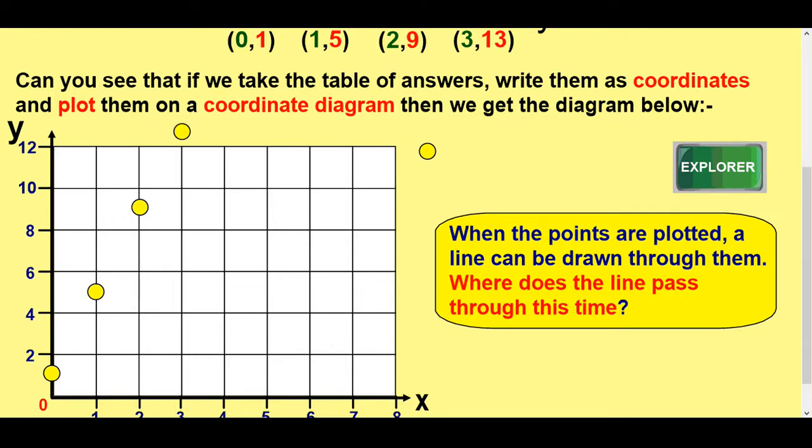So, once you've done that, you can join them up, and that should create a straight line. Because these are all linear relationships. Linear means straight. And they should all create straight lines when you plot them on a coordinate diagram. So, let's see if you're a question here. When the points are plotted, a line can be drawn. Where does the line pass through this time? Well, it passes through 1 instead of the origin where it did last time.